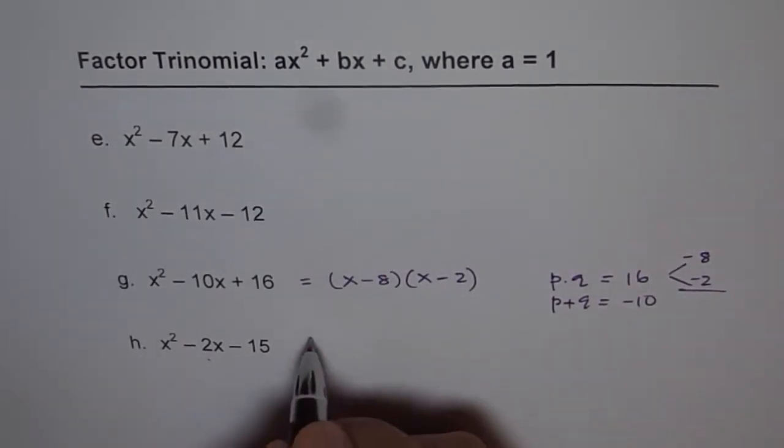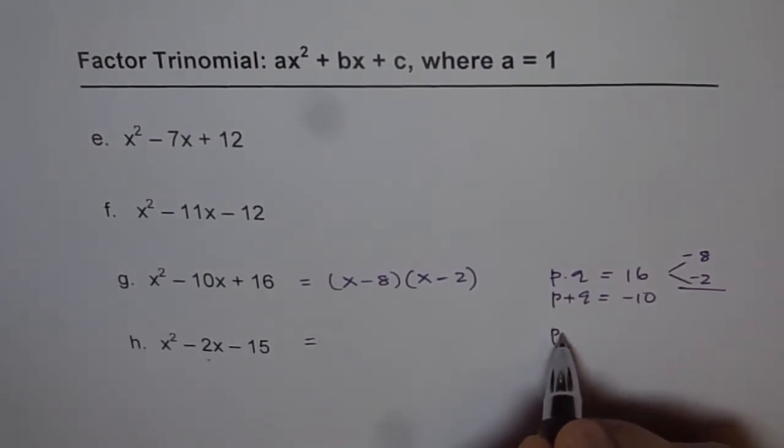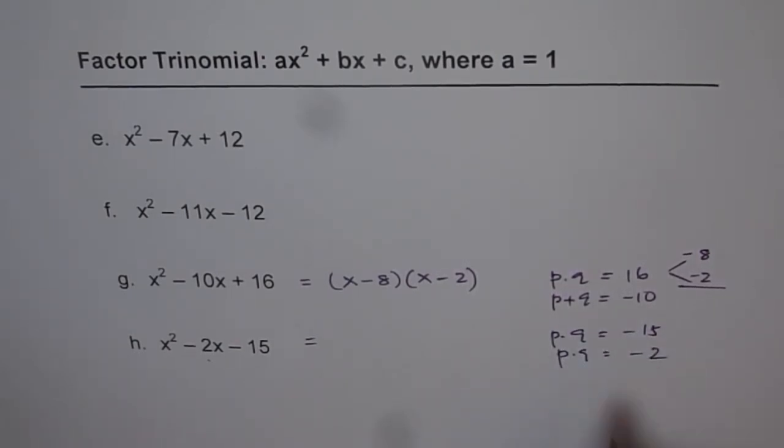Now let me do the last one for you. And this is x squared minus 2x minus 15. We are looking for product of minus 15 and sum of minus 2.